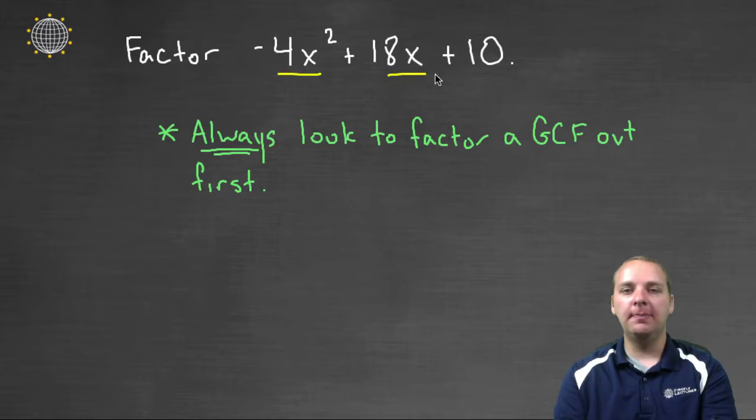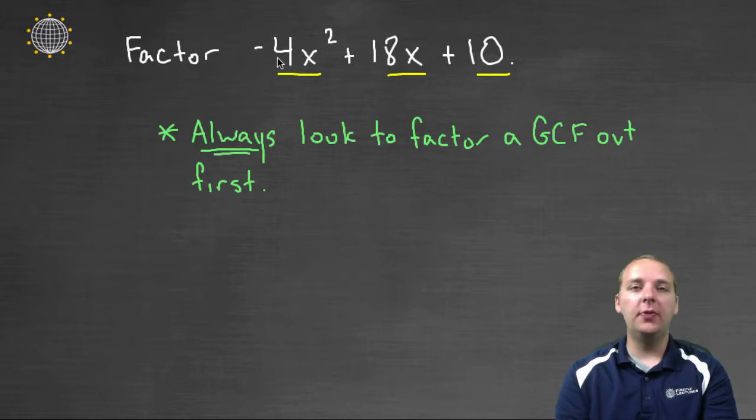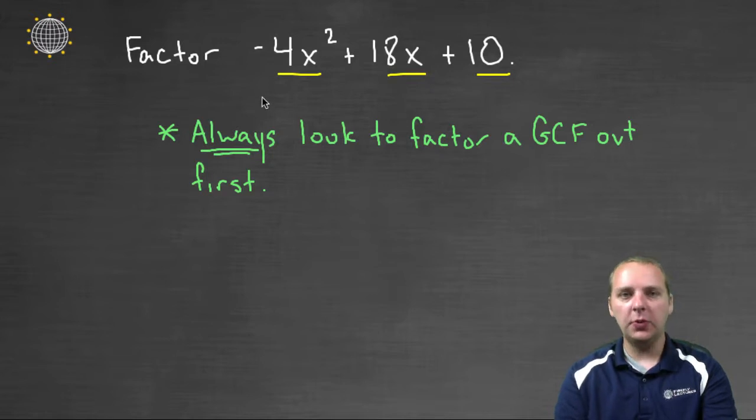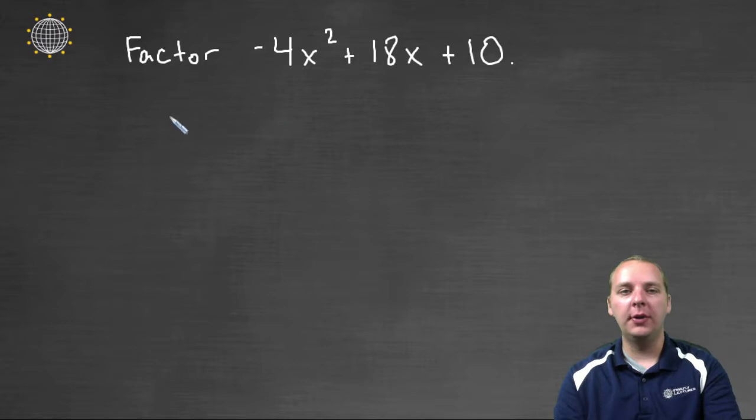So I'm going to look at these three terms here and I'm going to see if there's anything common to those three. This term has an x², this term has an x, and this term doesn't have an x at all. So there's not a variable common to all three. But look at the coefficients: -4, 18, and 10. All of those are divisible by 2. So 2 is a factor of all of those. So what we can do is we can pull a 2 out of all three terms.